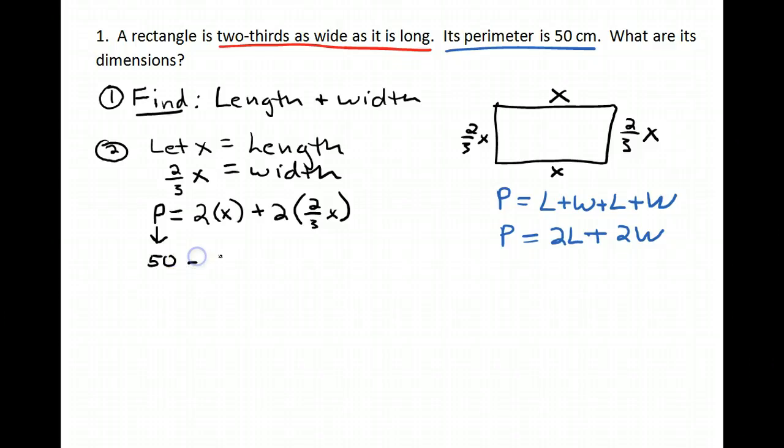So the perimeter of 50 is 2x plus, now 2 over 1 times 2 over 3 is four-thirds x. Now we've talked about what we do if we have fractions. And I have fractions and I don't really want to deal with fractions.